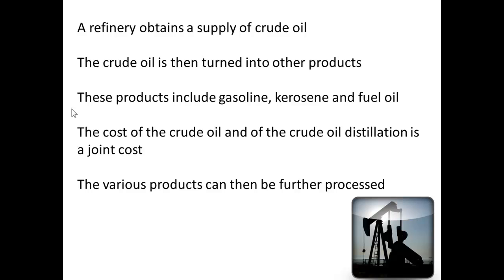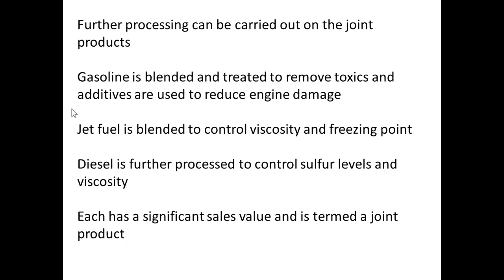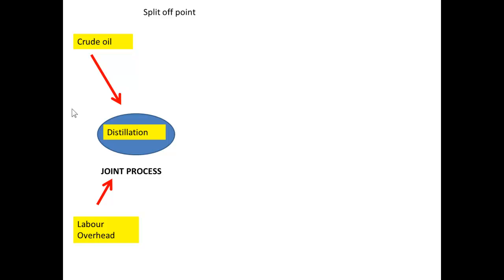A good example would be a refinery which takes in crude oil and distils it into other products, including gasoline, kerosene, and fuel oil. The cost of distilling the crude oil becomes the joint costs. Various products can then be further processed: gasoline can be blended and treated for automobile engines; jet fuel is blended with additives to control viscosity and freezing points; and diesel is processed to control viscosity and sulfur levels. Each product has a significant sales value and is a joint product.